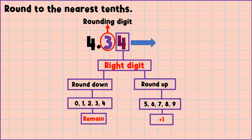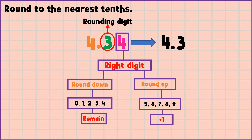So what is 4 — round down or round up digit? 4 is a round down digit. So 3 will be remained. Then we are going to copy the digit to the left of 3, then drop the digit to the right of 3. We copy the decimal point and 4. Therefore, 4 and 3 tenths is our rounded number. This is the final answer.